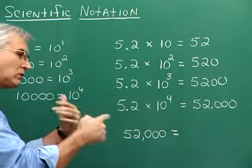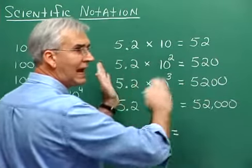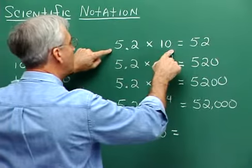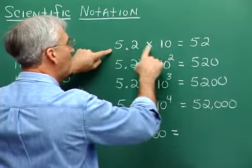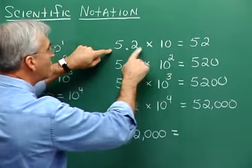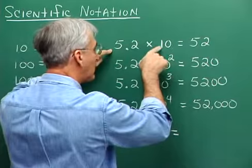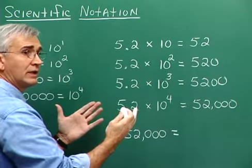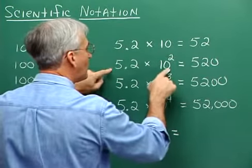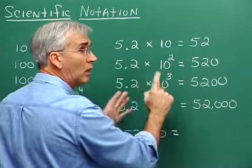When we multiply by powers of ten, it's just a sliding of the decimal point. 5.2 times ten means we slide the decimal point one place over to get fifty-two. We're sliding the decimal point one place because we have one zero following the one. And for ten squared, we really have two zeros following the one — this really means one hundred.